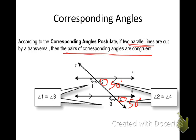If angle two is 50 degrees, how can I find angle one? They're supplementary because they form a line, so two is 50 — angle one is going to be 130 degrees. Today is going to be a lot like filling in pieces of a puzzle. You'll have certain information and you're going to start plugging it in based on these different postulates.